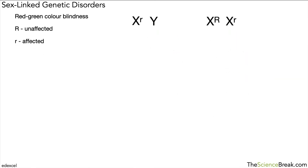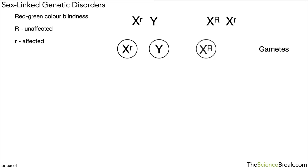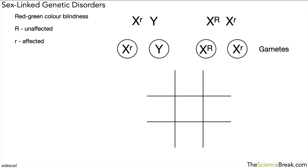To do a genetic cross, take a male with lowercase 'r' and a female with uppercase and lowercase 'R'. For the male, the gametes (sperm cells) can pass on either X with a lowercase 'r' or Y. For the female, she can pass on X with a capital 'R' or X with a small 'r'. We set these up in a Punnett square with the male along the top and the female down the side.